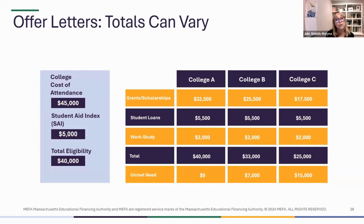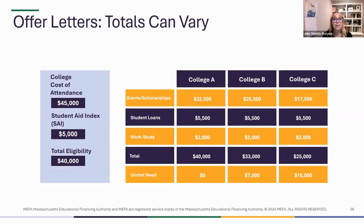College A might be one that meets full need — they'll often advertise that on their website. College A gave a grant of $32,500 plus student loan and work-study, totaling $40,000, fully meeting your financial need. College B gave a scholarship of $25,500 plus the student loan and work-study, but aid only totals $33,000, leaving unmet need — you'd need to come up with about $12,000 for your student to attend.